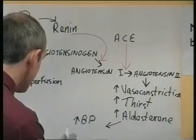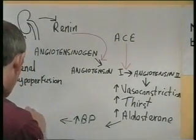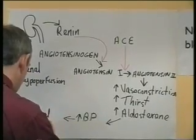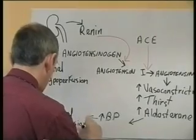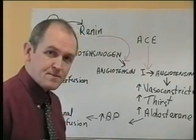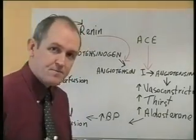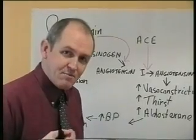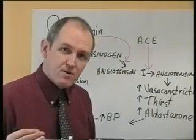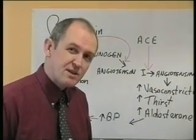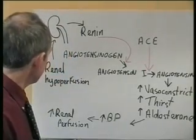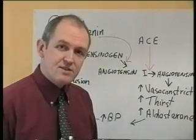When blood pressure increases, renal perfusion also increases, and if renal perfusion increases, the amount of renin released by the kidney will be reduced. This is a homeostatic control of blood pressure: when blood pressure is low, it is detected via blood flow to the kidney and renin acts to increase blood pressure. Once blood pressure is restored, blood flow to the kidney increases and renin production is reduced. This is called the renin-angiotensin mechanism.